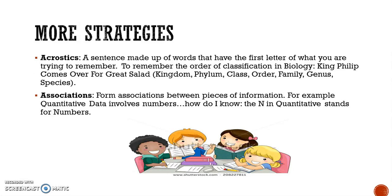And associations — we take pieces of information and associate them together. For example, there are two types of data: qualitative and quantitative. Quantitative data deals with numbers. The only way I remember that is because the letter N is in quantitative, and N is the first letter of numbers. So I associate those two things together.